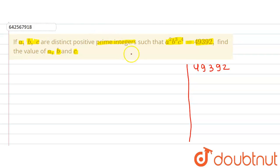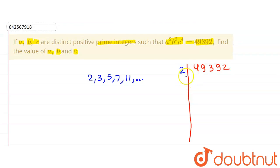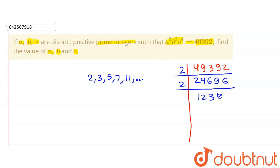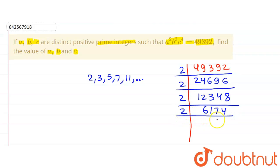We are going to divide 49,392 by the prime numbers — that is 2, 3, 5, 7, 11 and so on — until we get 1. Dividing 49,392 by 2 gives us 24,696. Dividing again by 2 gives 12,348. Again by 2 gives 6,174, and once more by 2 gives 3,087.